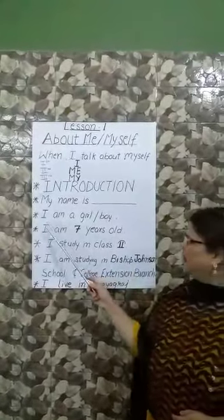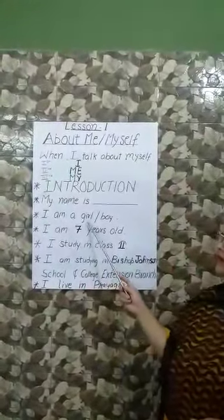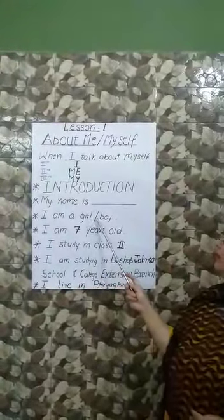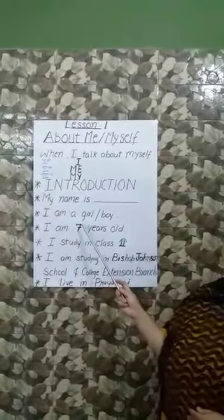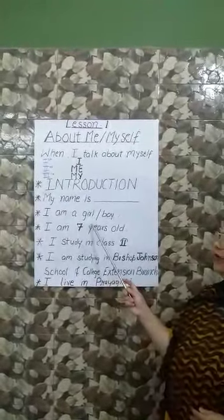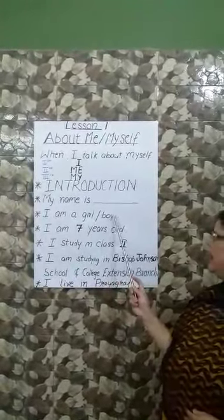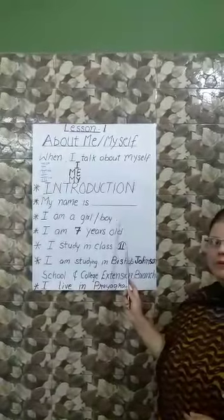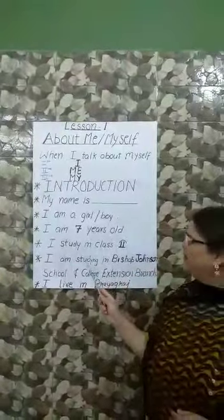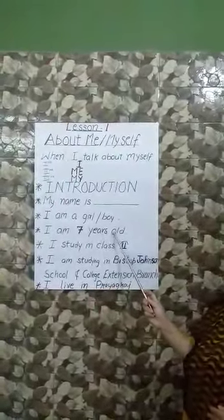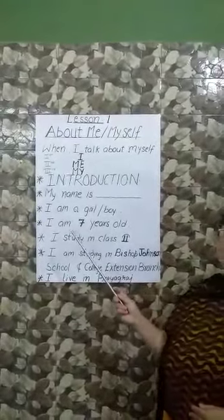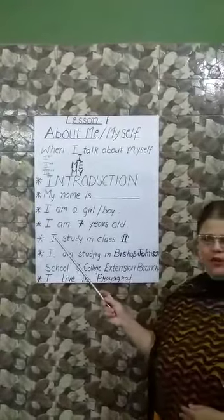Now, I am a girl or boy. If you are a girl, you will say I am a girl. If you are a boy, you will say I am a boy. In the same way, I am seven years old. You know your age, so you can tell your age.